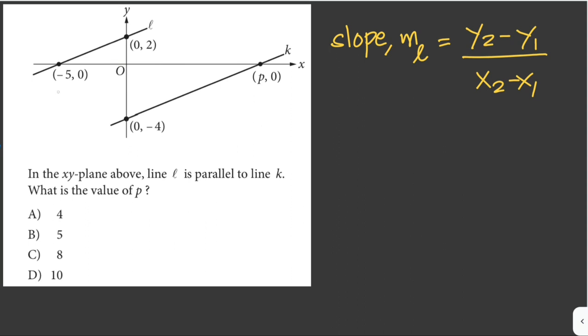So let's say this is our x sub 1, y sub 1 and this one is x sub 2, y sub 2. So the slope of line L is just y sub 2 which is 2 minus y sub 1 which is 0, and then x sub 2 is 0 minus negative 5. So this is 2 over 5.